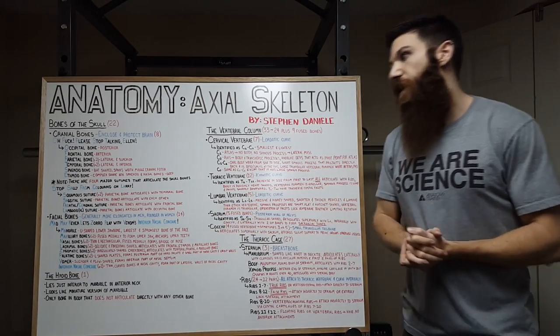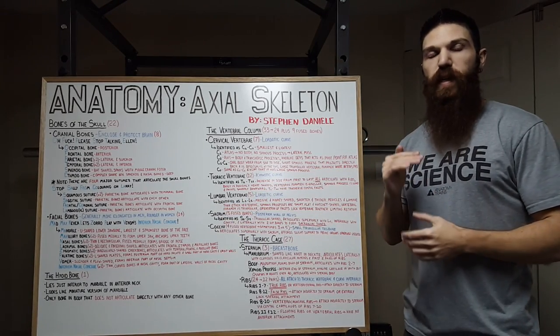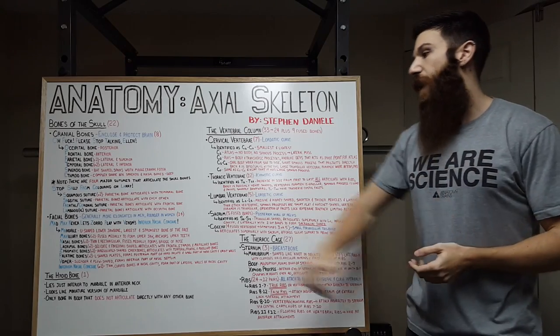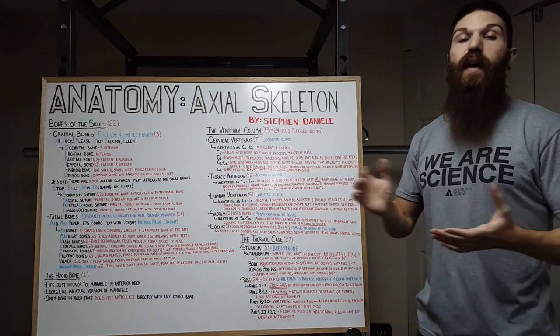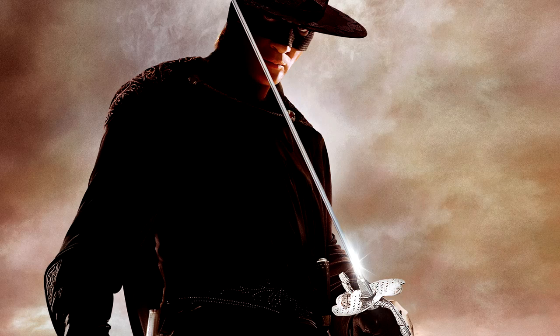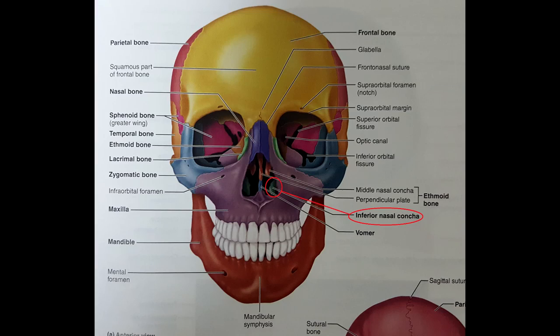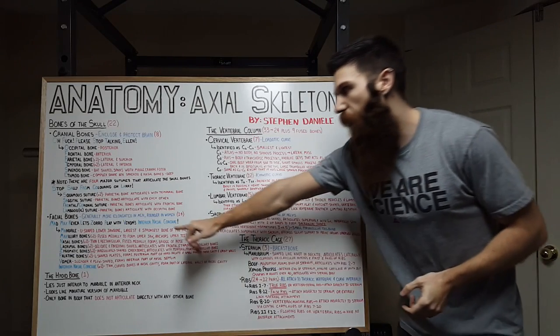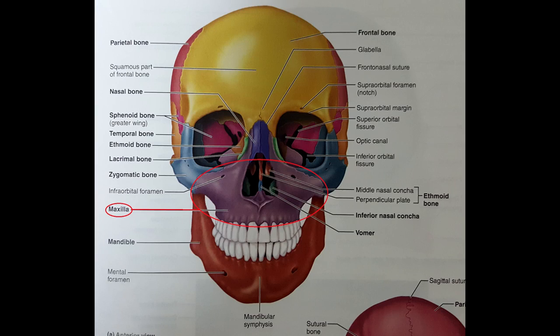Now let's take a look at the facial bones. The facial bones are generally more elongated in men; in women, they tend to be more round. We have 14 total facial bones. The mnemonic I've come up with is: Mad Max Never Lets Zorro Play With Venom's Inferior Nasal Conchae. First, we have our mandible — a U-shaped lower jaw bone. It is the largest and strongest bone of the face. Next, we have our maxillary bones. We have two, one on the right and one on the left, and they are fused medially to form our upper jaw and anchor our upper teeth. Our mandible anchors our lower teeth.